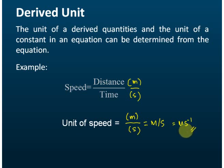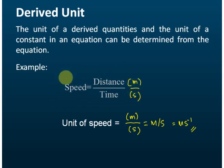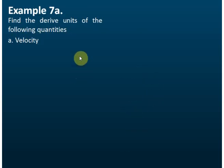This is how we find the unit of a derived quantity. First, we write the equation, then we list down the units of the base quantities in the equation, and then we determine the units of the derived quantity from the equation. Now let's find the derived units of the following quantities — starting with (a) velocity.